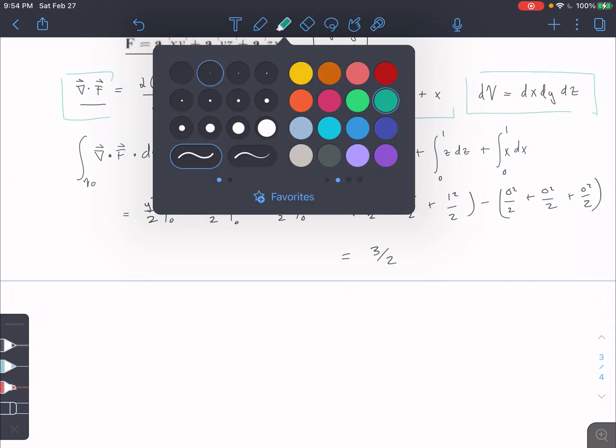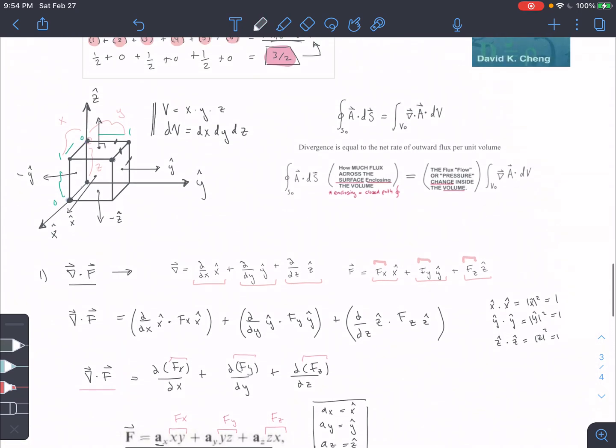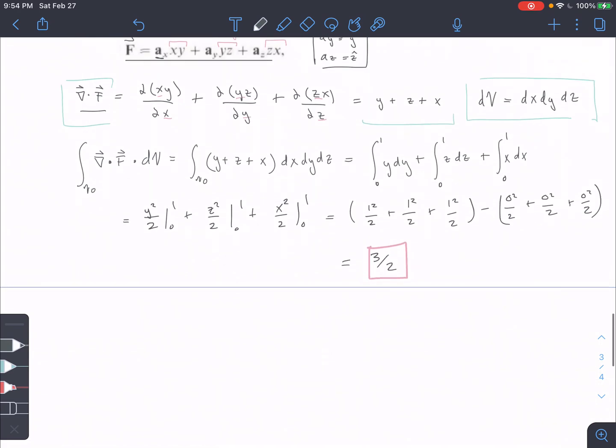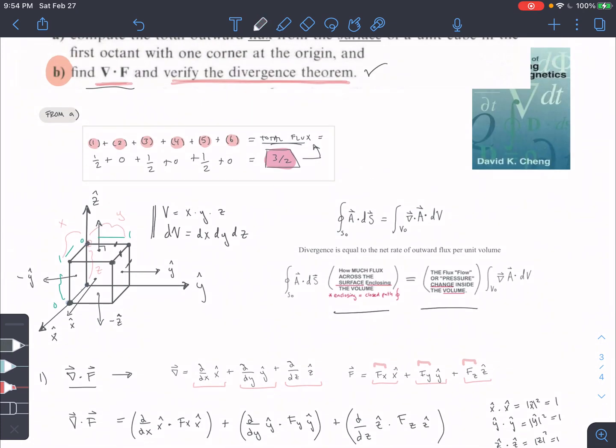And therefore, our divergence theorem is proved. We proved that the flux going through the surface, across the surface, and closing the volume, so through the surface, is equal to the flux change inside of the volume. So 3 halves is equal to 3 halves. And therefore, divergence theorem is proved.